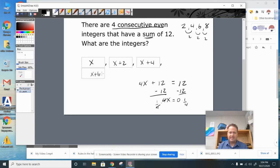So in this case, x is 0. So the smallest number is 0, and the next numbers are 2, 4, and 6.